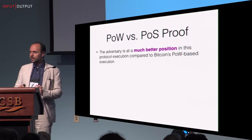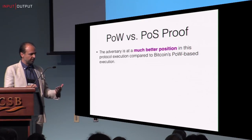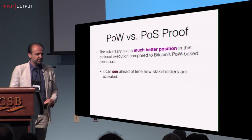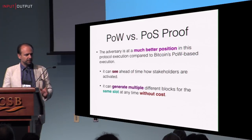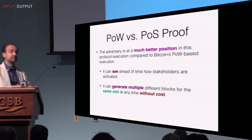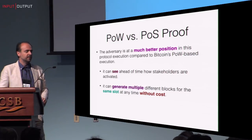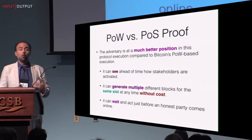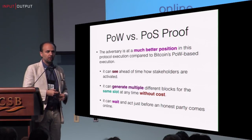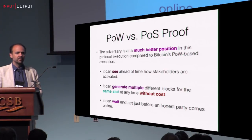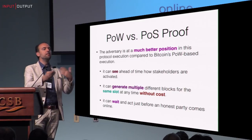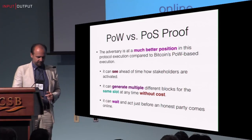The adversary is in a much better position here compared to a proof of work protocol execution. It can see ahead of time how stakeholders are activated. It can generate multiple different blocks for the same slot at any time without cost — contrary to Bitcoin, where the adversary must invest computational power. And the adversary can wait and act just before an honest party becomes activated, without doing anything in the slots assigned to itself. There is no need for the adversary to commit ahead of time how it extends a chain.